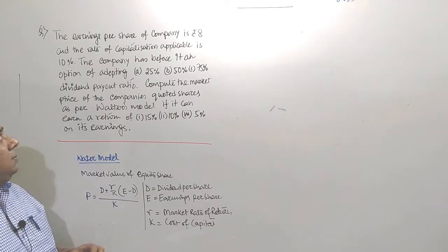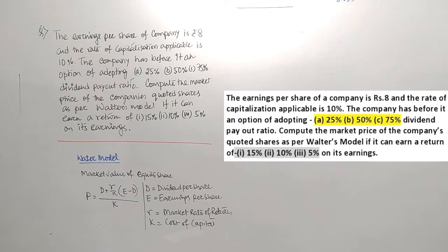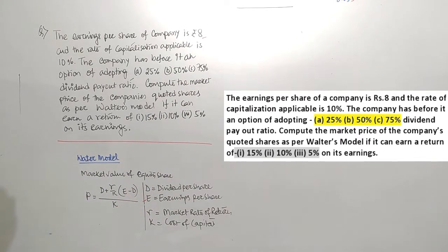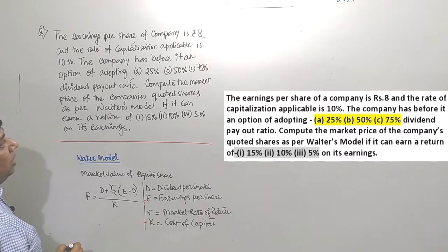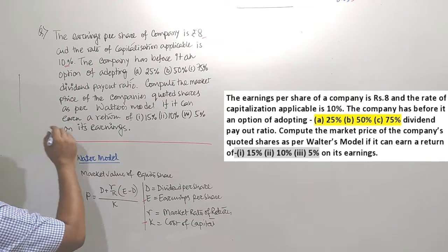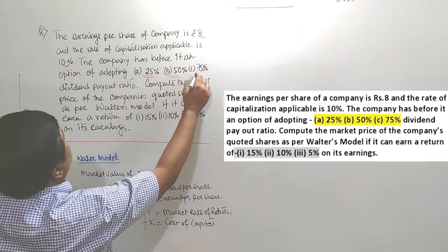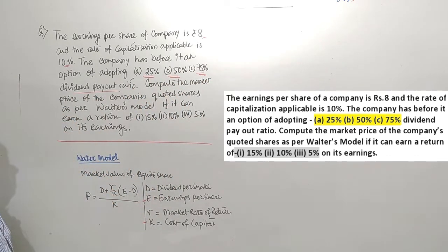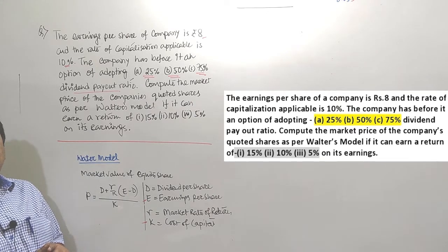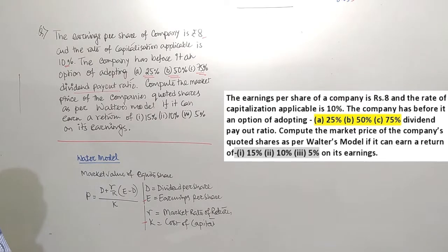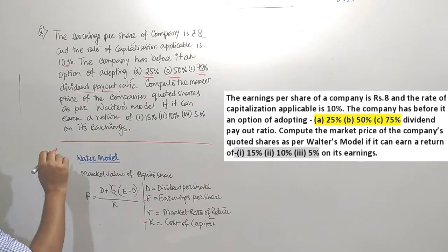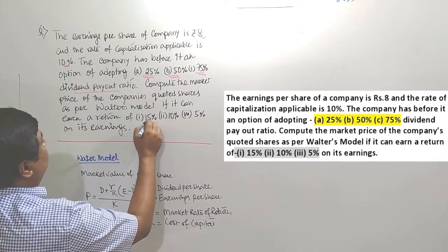Let's solve another question about Walter's model. The earnings per share of the company is Rs 8, and the rate of capitalization applicable is 10%, that is the cost of capital. The company has before it an option of adopting 25%, 50%, and 75% dividend payout ratio.